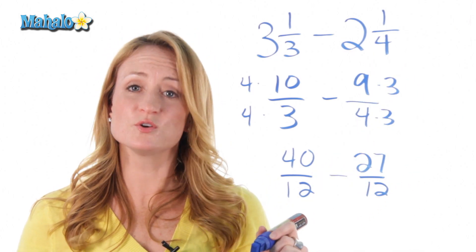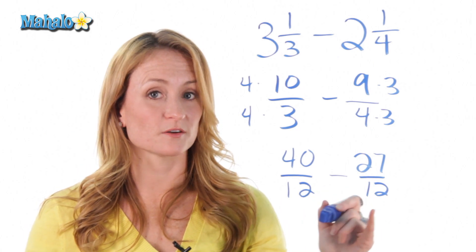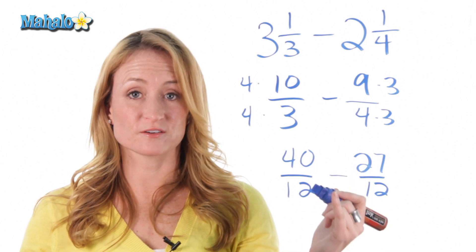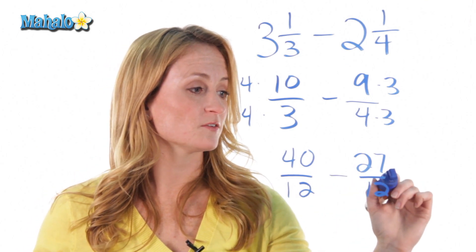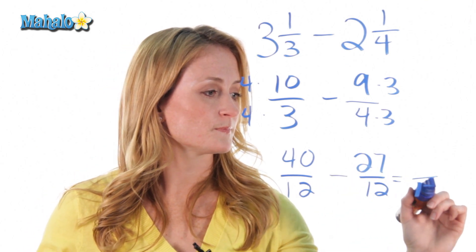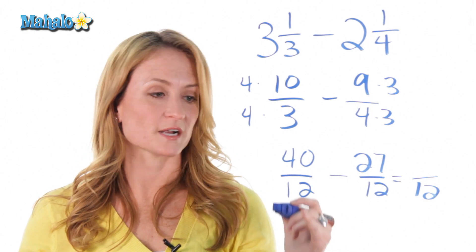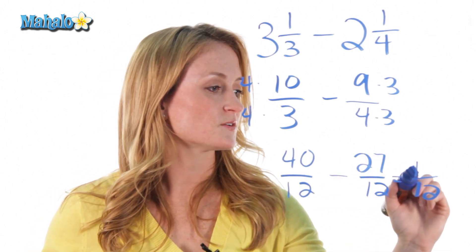So, now we have two fractions with a common denominator, so now we can subtract. And you remember that the rules of adding or subtracting fractions is you leave the denominator the same, and you just subtract or add the top. So, in this case, we're going to subtract. So, 40 minus 27 is 13.